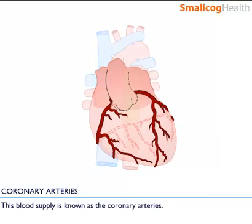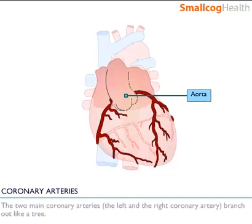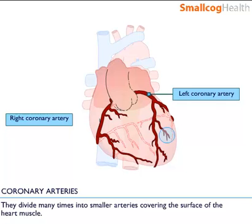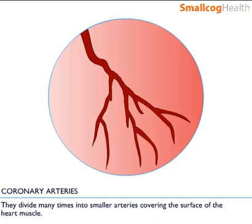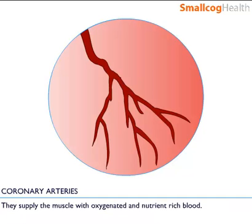This blood supply is known as the coronary arteries. The coronary arteries arise at the beginning of the aorta, the main blood vessel leaving the heart. The two main coronary arteries, the left main coronary artery and the right coronary artery, branch out like a tree. They divide many times into smaller arteries, covering the surface of the heart muscle, supplying it with oxygenated and nutrient-rich blood.